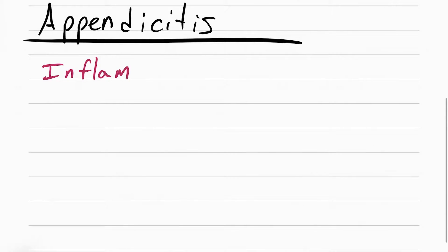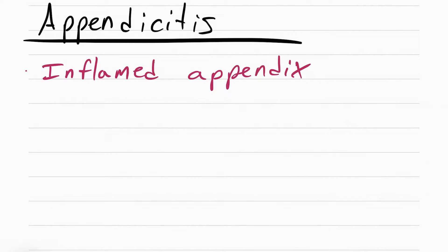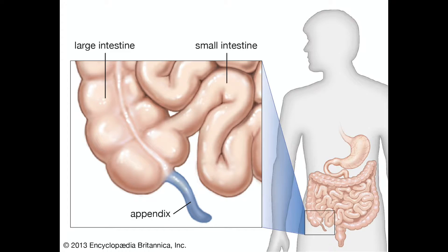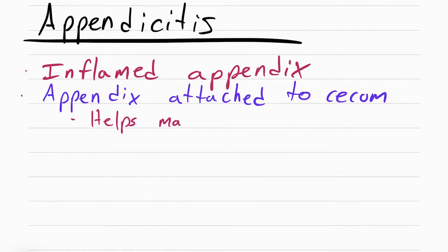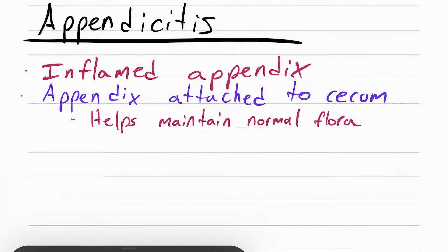Appendicitis literally means inflammation of the appendix. The appendix is a small tube that hangs off the cecum of the large intestine. For a long time we didn't know what the appendix was for, but now we think it's to help maintain the normal flora of the gut. Normal flora is another way of saying healthy bacteria.